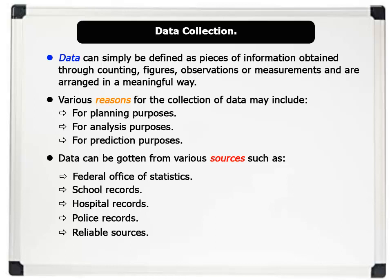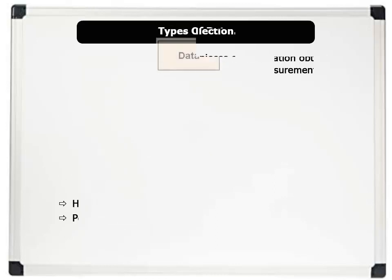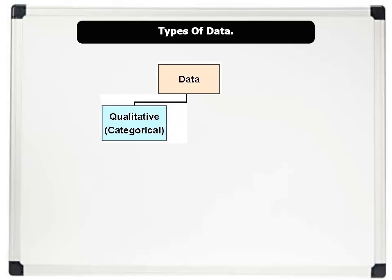Now, let us discuss the different types of data. There are two main types of data, namely: 1. Qualitative data, which are categorical and are not given number values.